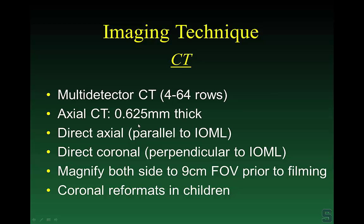A few years ago, 1.5 or 1.25mm was sufficient, but now in 2006, especially since we've lowered our dose, 0.625mm is the standard. For acquisition, we use direct axial with coronal reformats — we've switched over to coronal reformats in both adults and children — and we always magnify each side to about a 9-centimeter field of view.